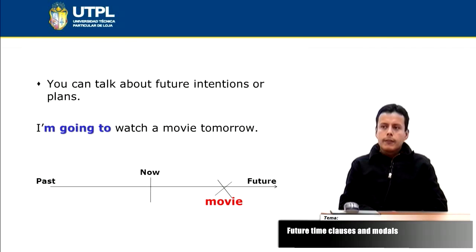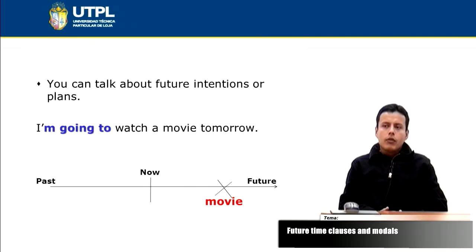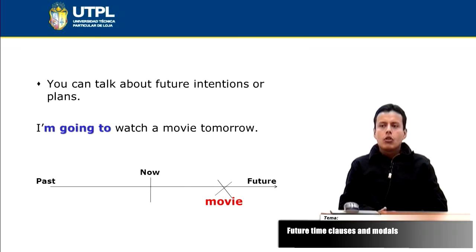In this case, the action of watching a movie is in the future. You can see past, now, and the action of watching a movie is in the future. When I'm using going to in this sentence, I'm talking about a future plan. It means that I am almost 100% sure that I'm going to watch a movie tomorrow.